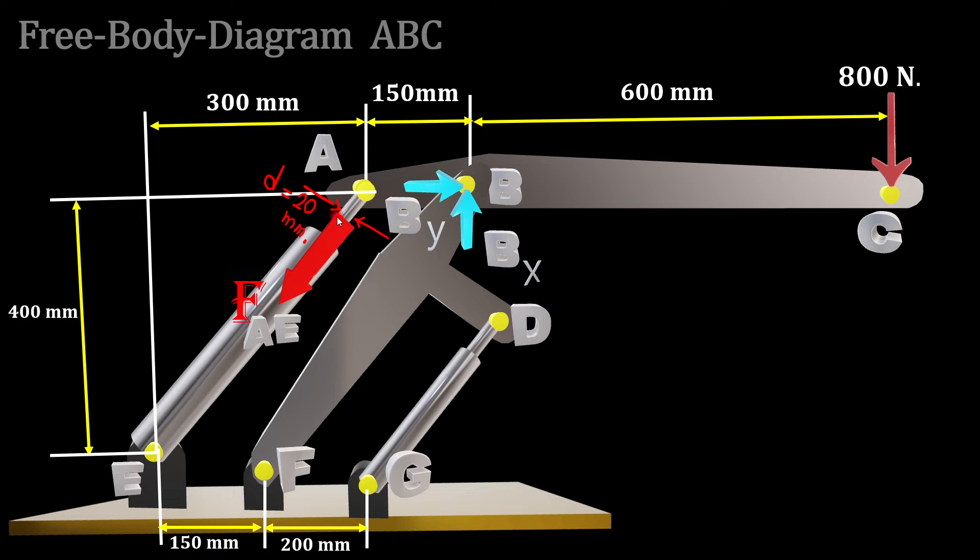As soon as we have the force at AE, by having the diameter of connection of 20 millimeters, we can simply get the normal stress at AE equal to FAE over the area.